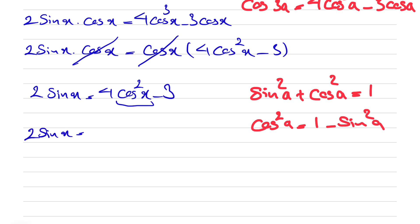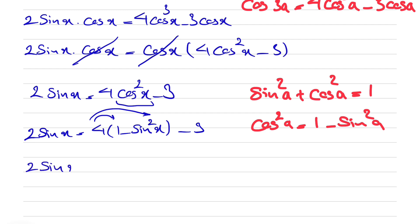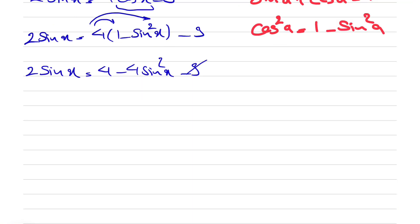So we have 2 sine of x equals 4 times (1 minus sine squared of x) minus 3. Expanding: 2 sine x equals 4 minus 4 sine squared of x minus 3, which gives 2 sine x equals 1 minus 4 sine squared of x. Bringing everything to the left side: 4 sine squared of x plus 2 sine of x minus 1 equals 0.